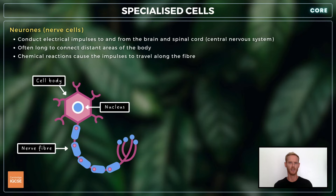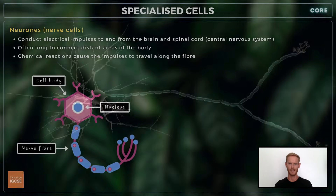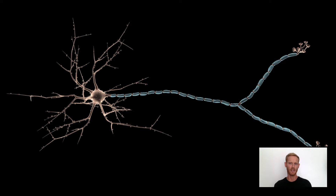Neurons, or nerve cells, are specialized to deliver information throughout the body in the form of electrical impulses. These cells are often very long as they connect distant parts of the body, like the feet, to the brain and spinal cord.